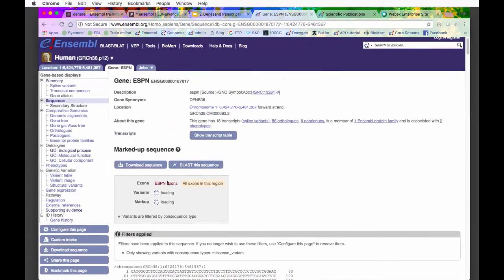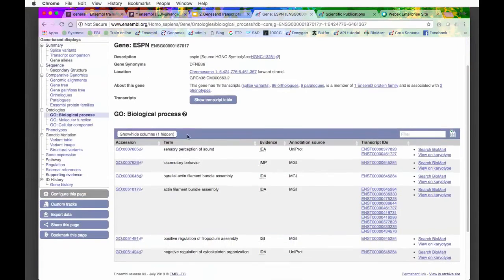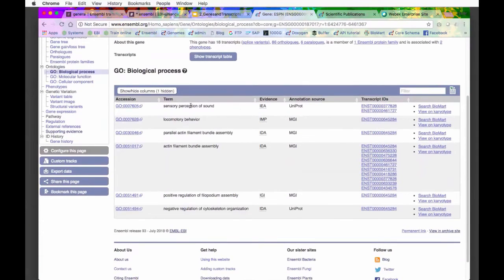I'm going to go to GO Biological Process. This is looking at gene ontology. Here we can see some of the functions of the gene. We've got sensory perception of sound, locomotory behavior. We can see the evidence for this. This was inferred by electronic annotation. This was inferred from a mutant phenotype. We can see where this annotation came from.